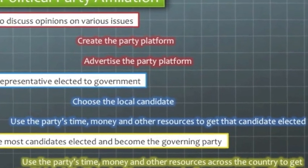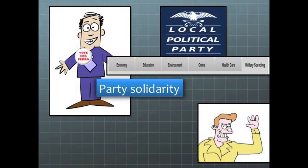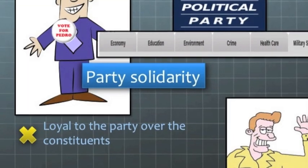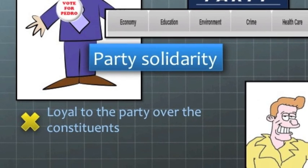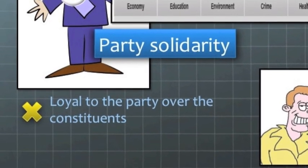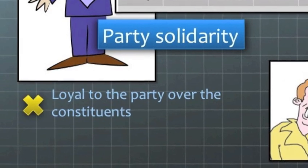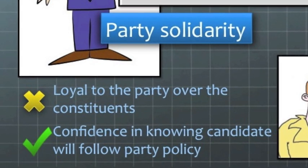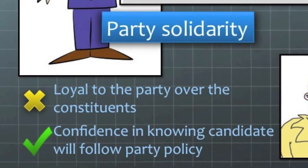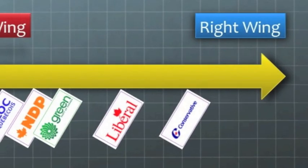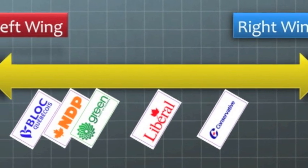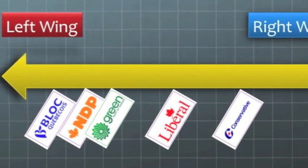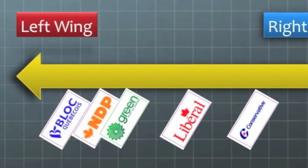After all, it was the party that helped them get elected. We call this party solidarity. Many Canadians can get frustrated by party solidarity because it means that the party member must think of what the party wants before considering what the constituents who elected them want. But this isn't necessarily a bad thing. Because of party solidarity, voters can have the confidence that the ideology of the party will be followed. If I vote Conservative, I expect that candidate to follow the Conservative policy, which is more right-wing. Or if I vote NDP, I expect them to follow the left-wing NDP policy.